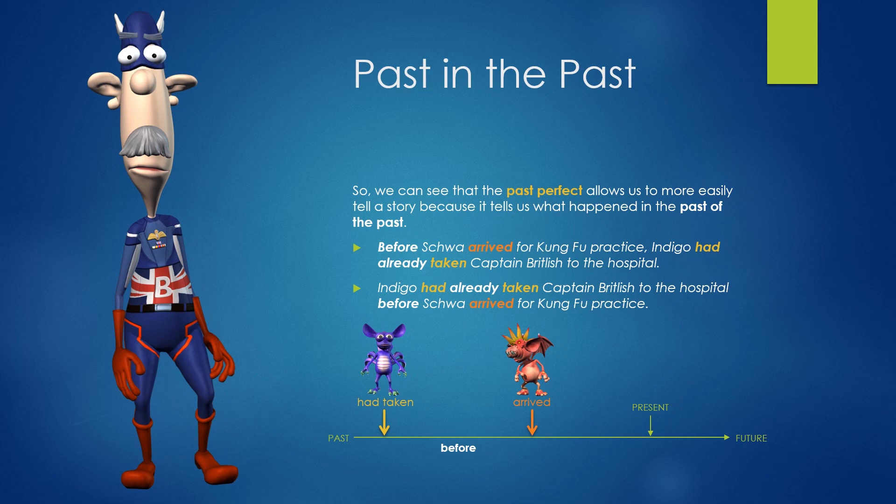Past in the past. The past perfect allows us to more easily tell a story because it tells us what happened in the past of the past. Before Schwa arrived for kung fu practice, Indigo had already taken Captain Britlish to the hospital. Indigo had already taken Captain Britlish to the hospital before Schwa arrived for kung fu practice.